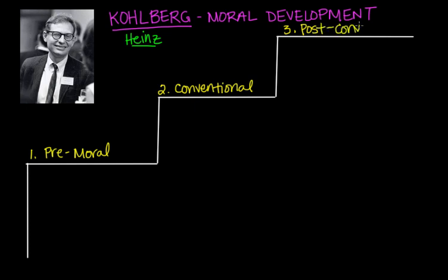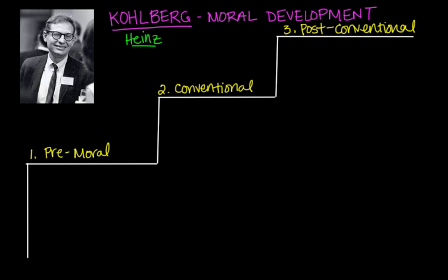Kohlberg set these up like a ladder — think of it as the ladder of morality. The first level is the pre-conventional or pre-moral stage, the second is the conventional stage, and the last is the post-conventional stage. Kohlberg said that people can only pass through these levels in the order listed, and each new stage replaces the reasoning typical of the earlier stage. He also noted that not everyone achieves the last stage. Each of these three levels was further split into two, making six stages of moral development altogether.